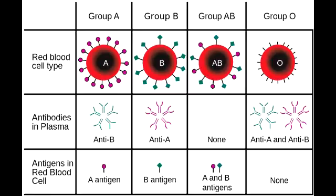One additional thing to note is that anti-A and anti-B antibodies are of IgM; therefore, they do not cross the placenta. But the anti-RH antibodies are of IgG, so they are able to cross the placenta. Anti-RH is something we need to look into when talking about pregnancies.